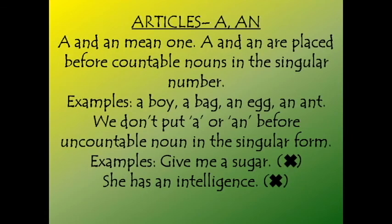Let us now first learn about the indefinite articles a and an. A and an actually mean the same, but a is placed before countable nouns which are singular in number — for example, a boy, a bag, an egg, an ant. These two indefinite articles are used only before countable nouns, meaning nouns we can count, and which are singular, meaning only one.